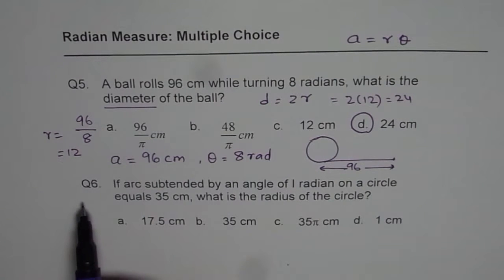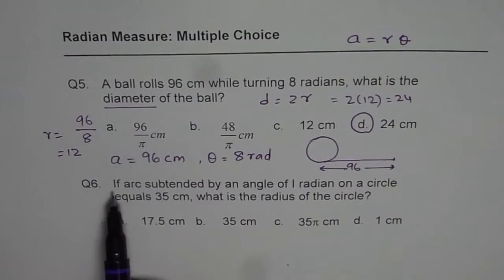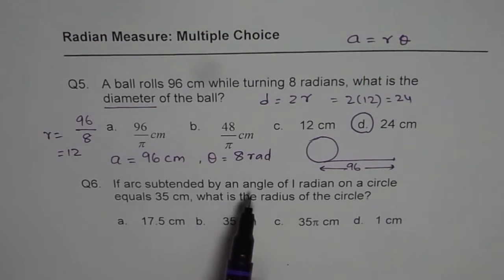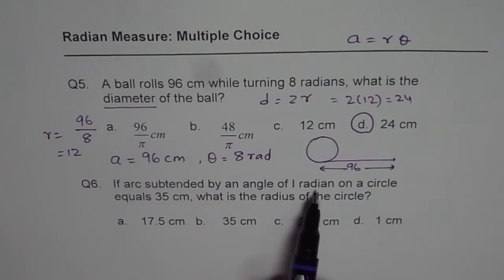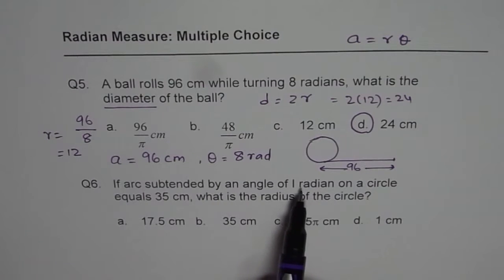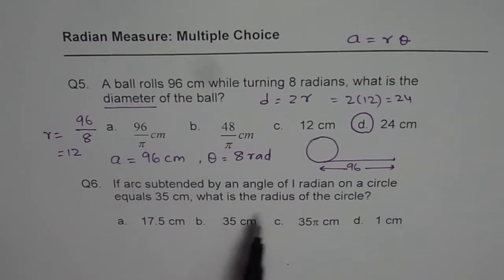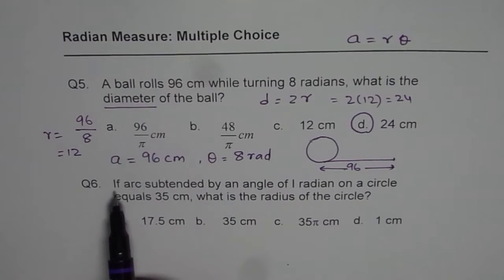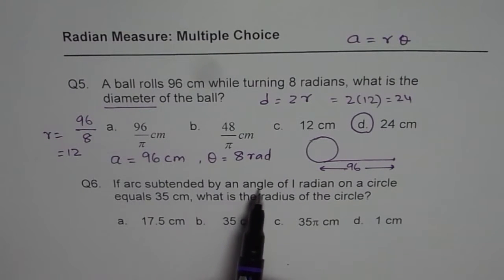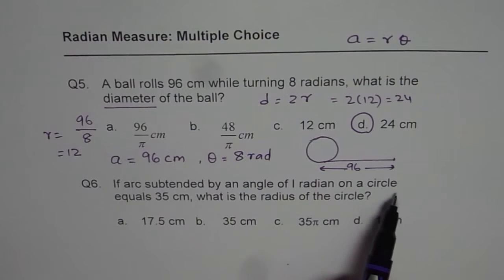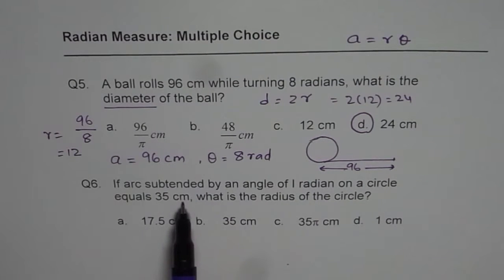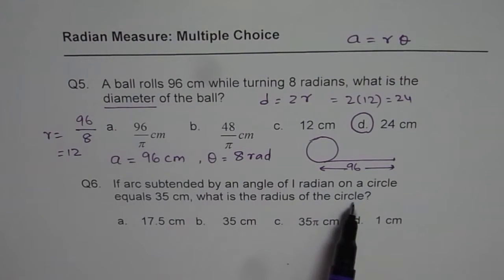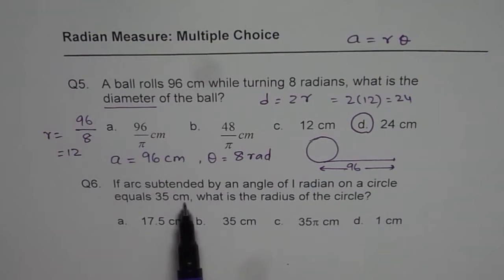Now let's look at question number six. If the arc subtended by an angle of one radian — when the angle is one radian, the arc length is the same as the radius; that is the definition of one radian. So: if the arc subtended by an angle of one radian on a circle equals 35 cm, what is the radius? By definition, the radius is the same as the arc length.